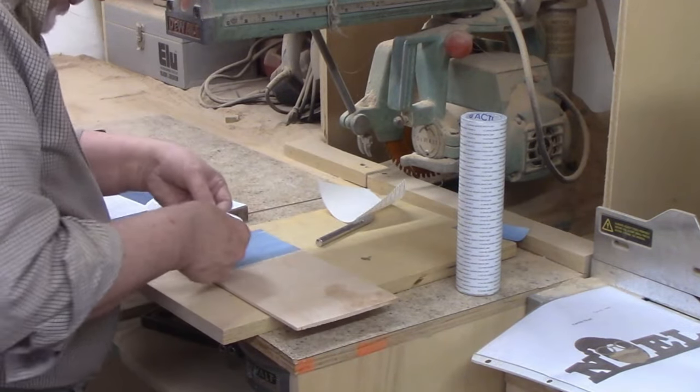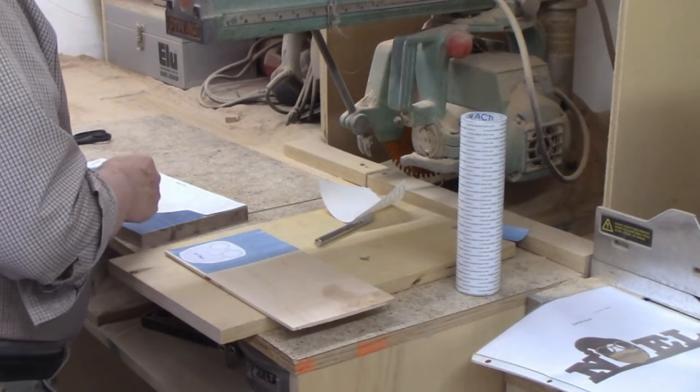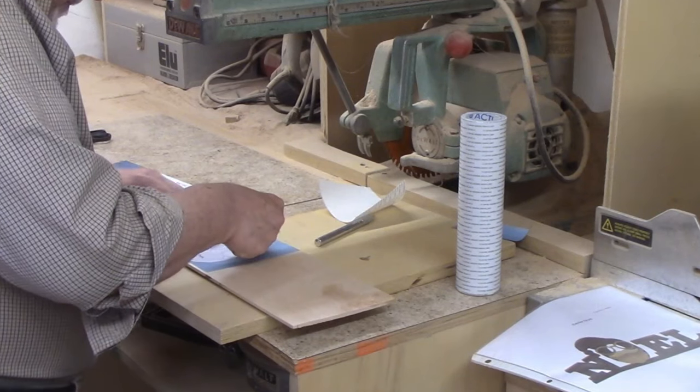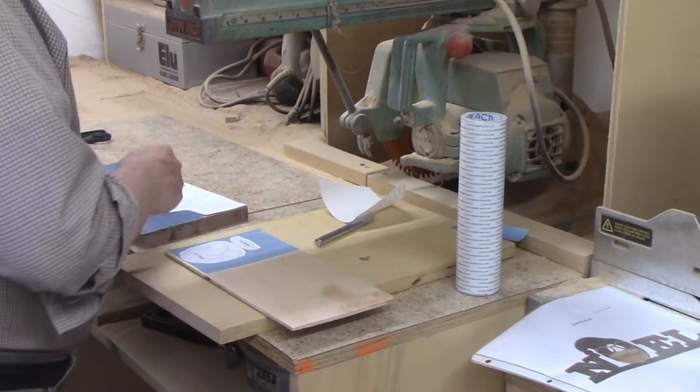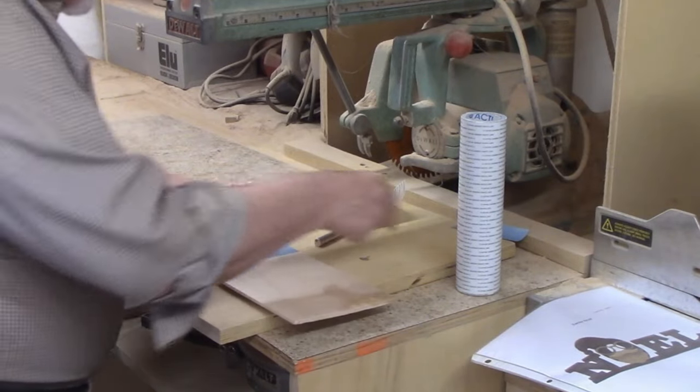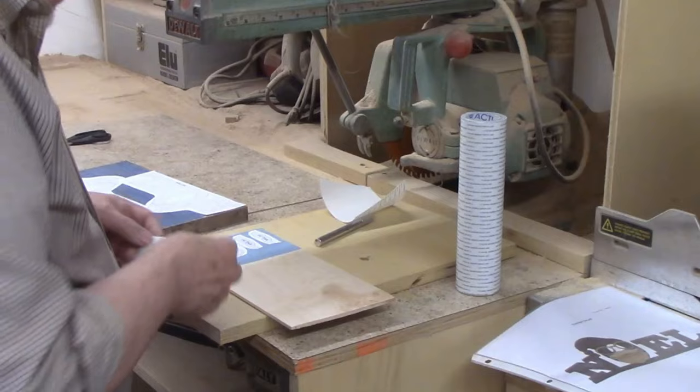I had some quarter inch maple left from another project so I was able to lay out the patterns for Santa on that. I keep many pieces large enough to be useful in boxes organized by thickness. This way when I need some small quarter inch parts I can look in that box first. Many times I have exactly what I need for small pieces like these in those boxes.